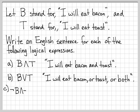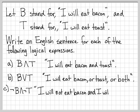Part C: what about not B and not T? This would be represented as 'I will not eat bacon' — because not B means I will not eat bacon — and 'I will not eat toast' — because not T means I will not eat toast. So the English sentence is: 'I will not eat bacon and I will not eat toast.'